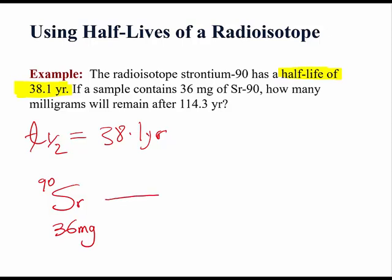One thing we know is that after one half-life, the 36 mg would have decayed to 18 mg. After another half-life, the 18 mg would have decayed to 9 mg.